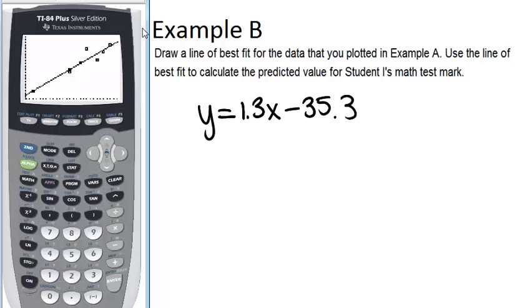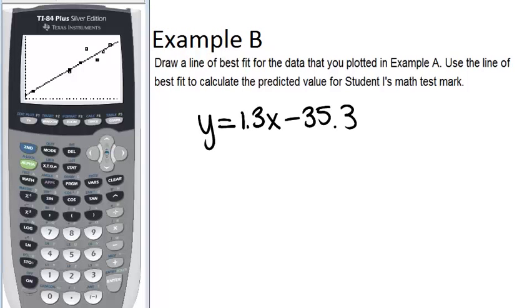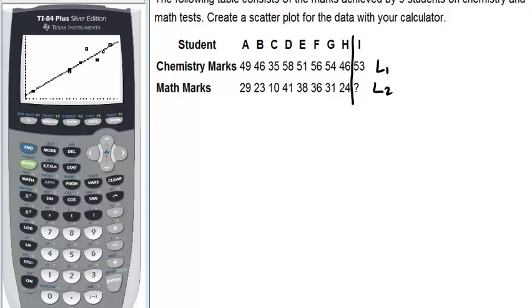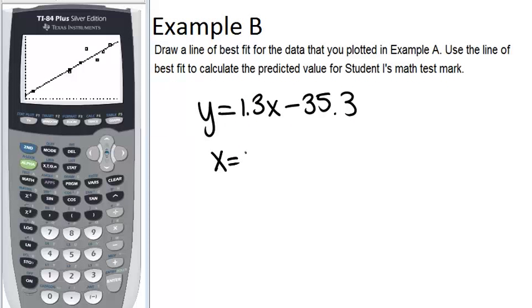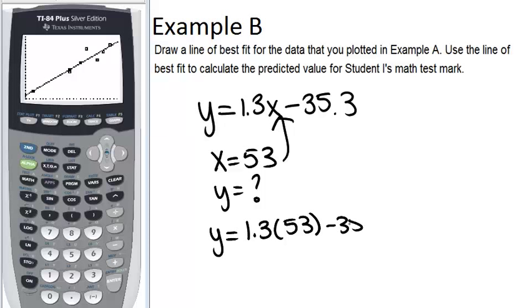Now it says, use the line of best fit to calculate the predicted value for student I's math test mark. So let's remind ourselves what student I had for chemistry. If we go back up here, student I had a 53 in chemistry, and we're trying to figure out what they would have had in math. Okay, so we know that X equals 53, and we're trying to figure out what does Y equal. So a quick way to do this would be to just plug in 53 for X in our equation and calculate Y.